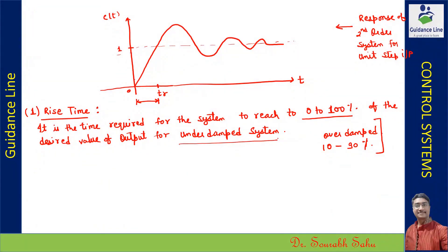For the over-damped system condition — when the damping ratio is greater than one — the rise time is defined differently. In this particular case, the rise time is when the system response moves from ten percent to a ninety percent value.